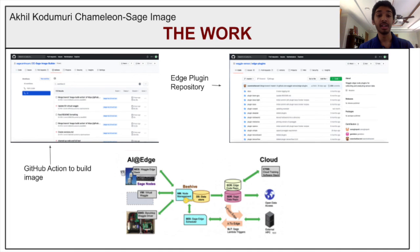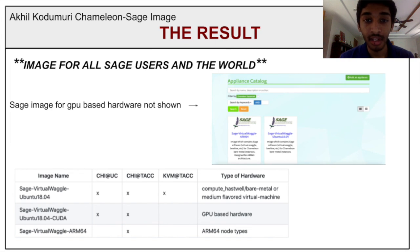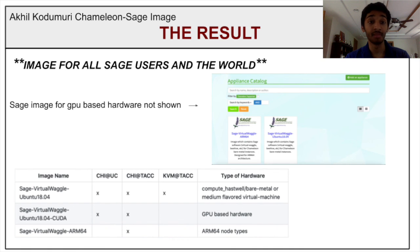Additionally, using GitHub Actions, I streamlined the process of creating the Chameleon Sage image so that feature developers working with or for Sage can spin up a new image with a simple git push. As a result of the efforts described in this presentation, three different types of Sage images are now publicly available for Chameleon users. I would like to thank the Sage and the Chameleon team for a wonderful summer. Thank you all for listening.